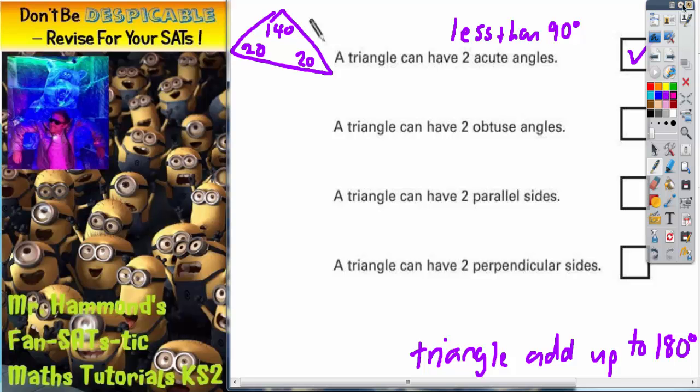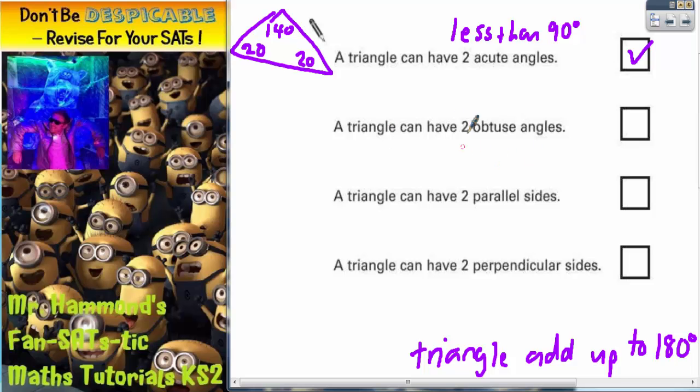Next statement. A triangle can have two obtuse angles. Well, obtuse angles are bigger than 90. So for example, 91 degrees, 92 degrees, 110 degrees, 150 degrees.